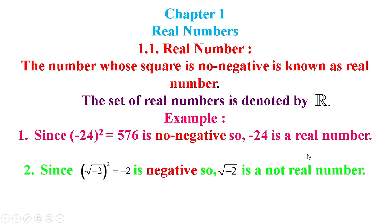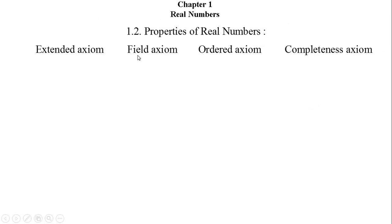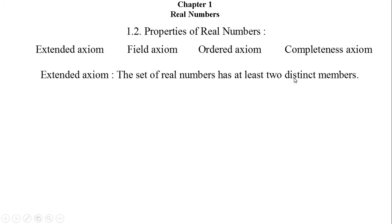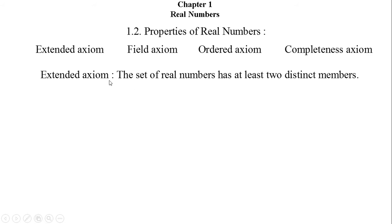Please remember that the set of real numbers is denoted by the special type of R. The properties of real numbers are divided into four types: the extended axioms, the field axioms, the order axioms, and the completeness axioms. I will now discuss each of these.